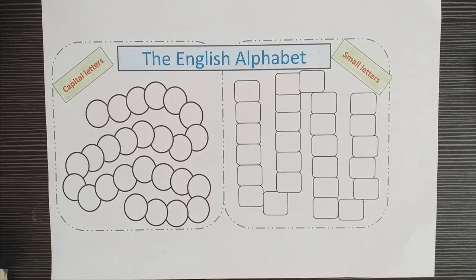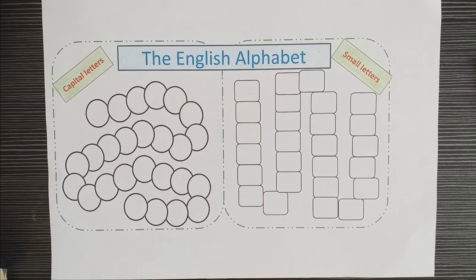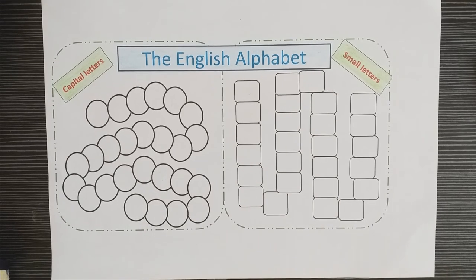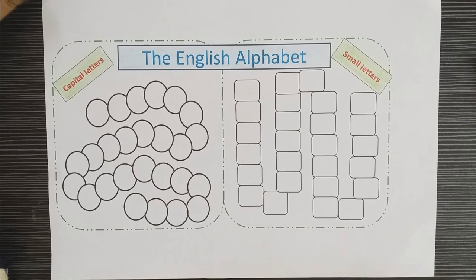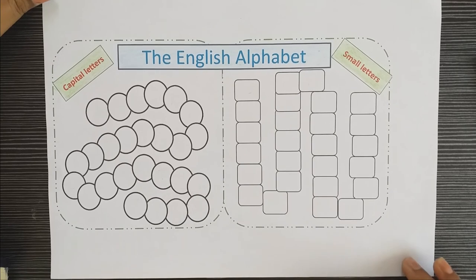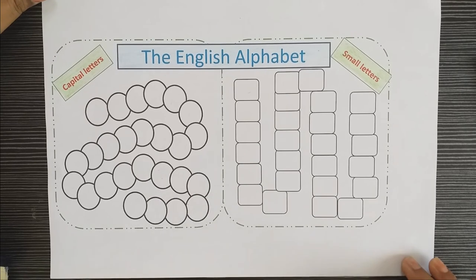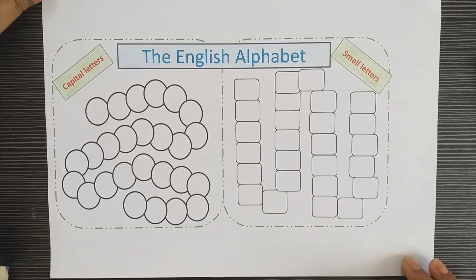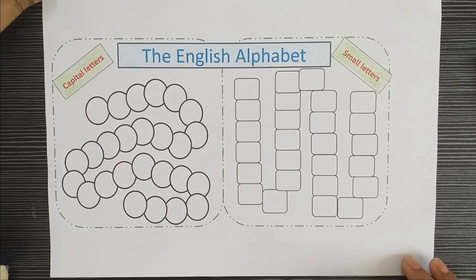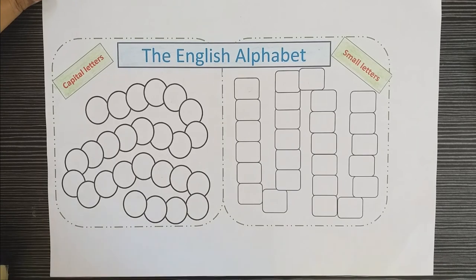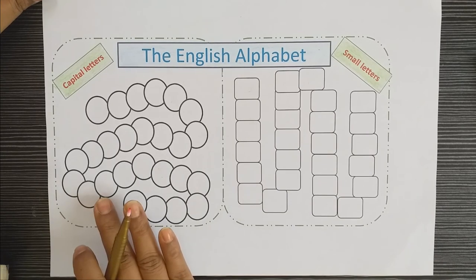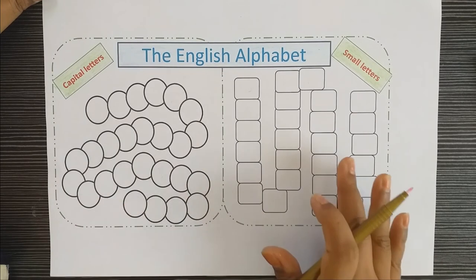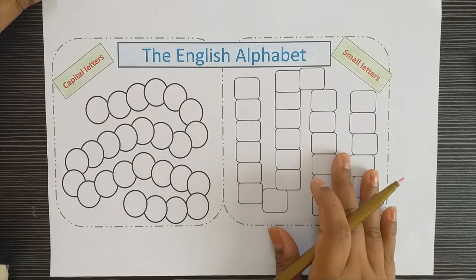Hello, my dear children! How are you all doing today? Today we are going to learn about the English alphabets. You all know there are 26 alphabets, and they have capital letters and small letters.